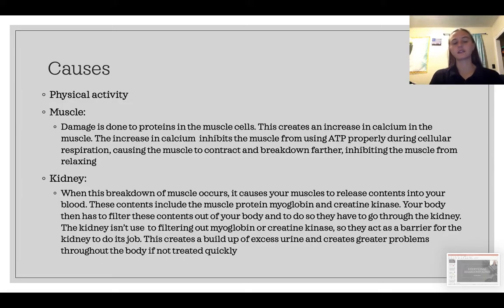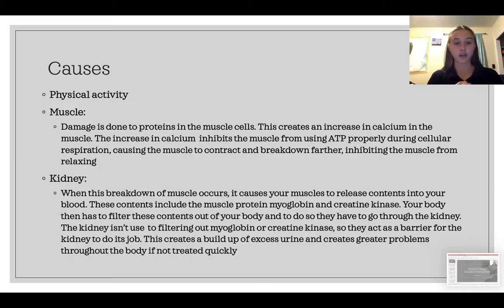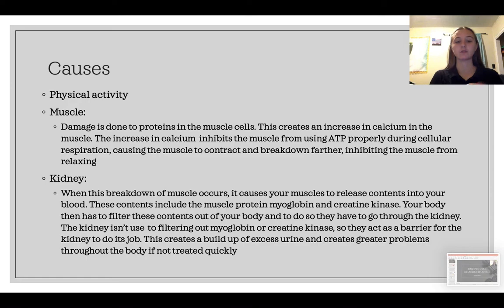Some causes — physical activity, since we're dealing with the exertional form. Damage is done to the proteins in the muscle cells, which creates an increase in calcium within the muscle. This calcium inhibits the muscle from using ATP, which is how we go through cellular respiration and cause the muscle to contract. That muscle contracting breaks down the muscle further and doesn't let it relax. So the individual is just sitting there with, say, their calf cramping and they just can't relax it — there's excess calcium and they can't go through cellular respiration.